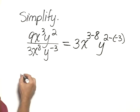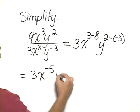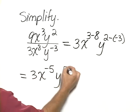Simplifying further, this would be equal to 3x to the negative 5, and then y to the positive 5.